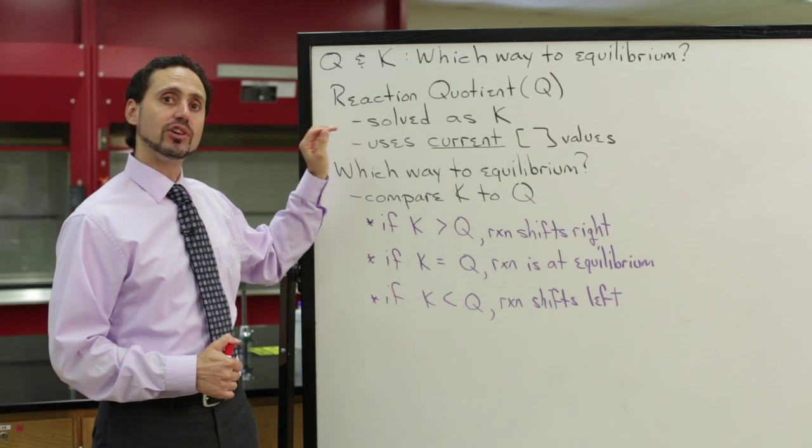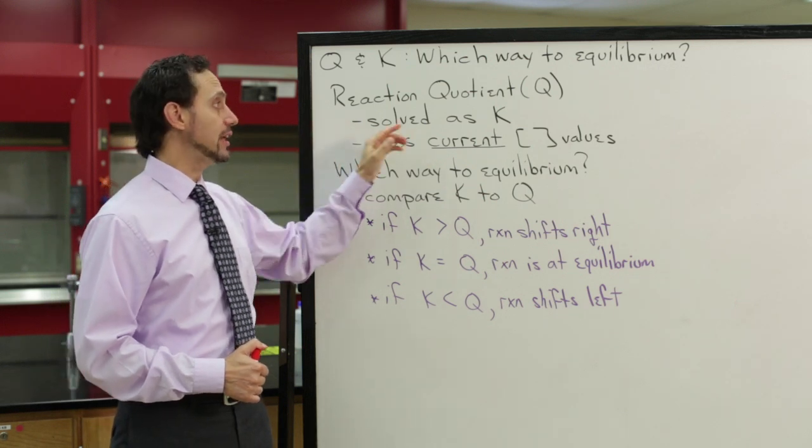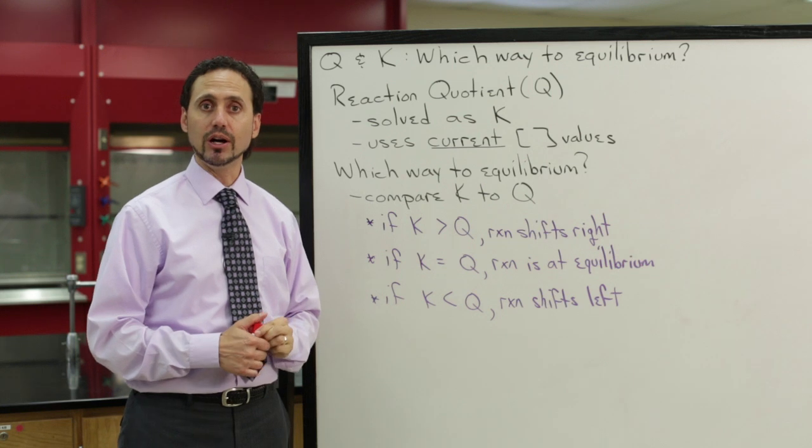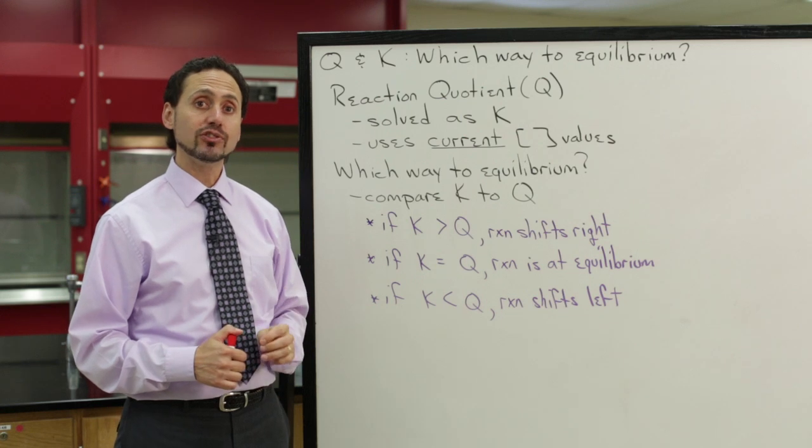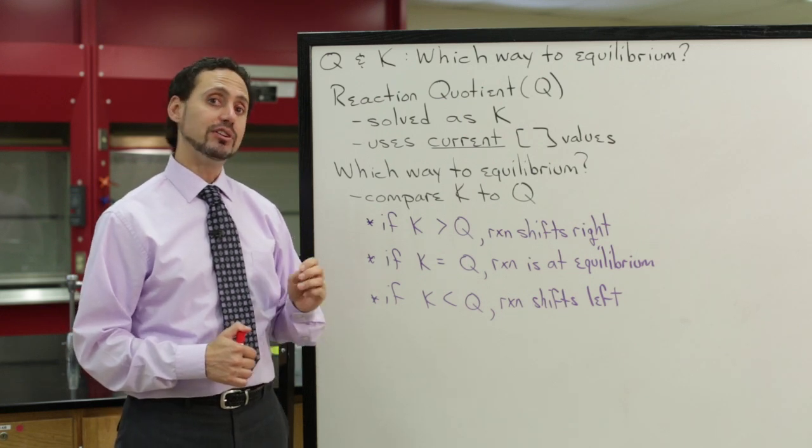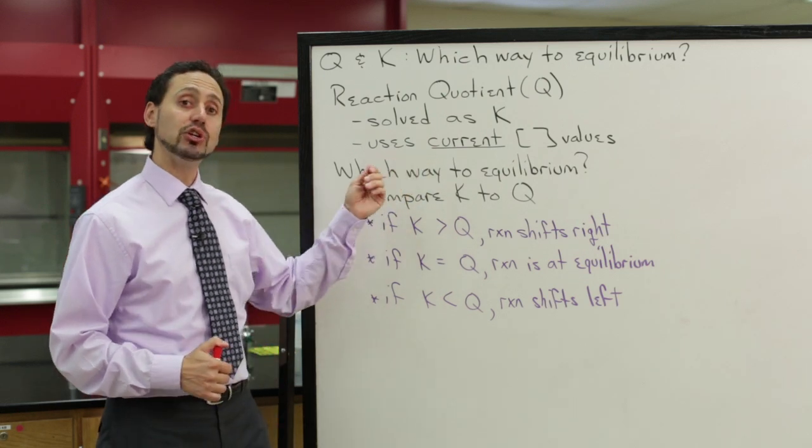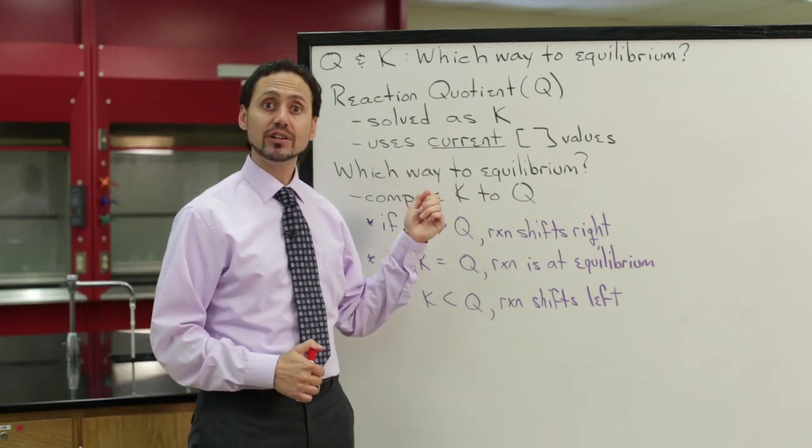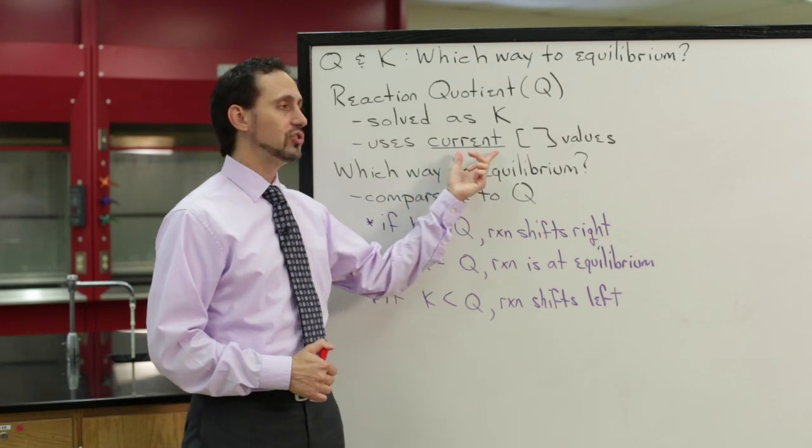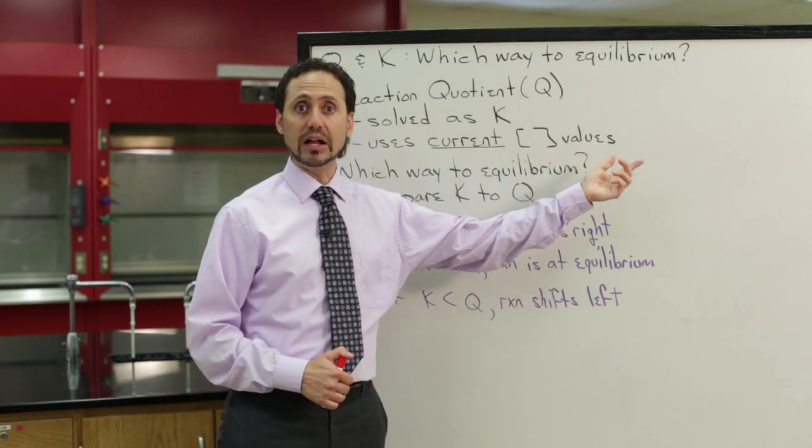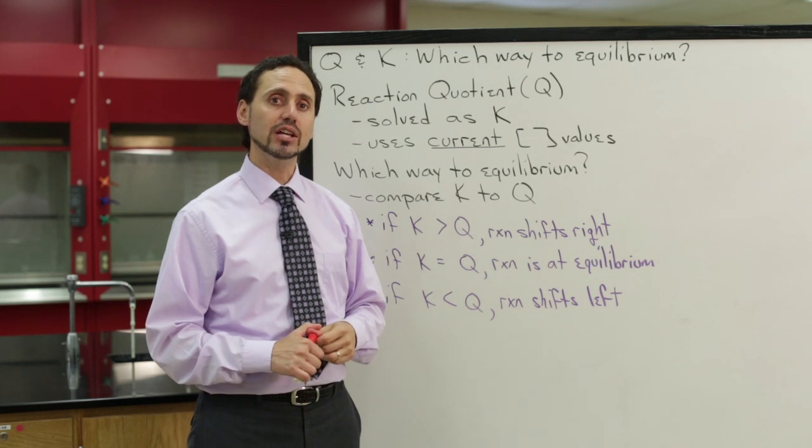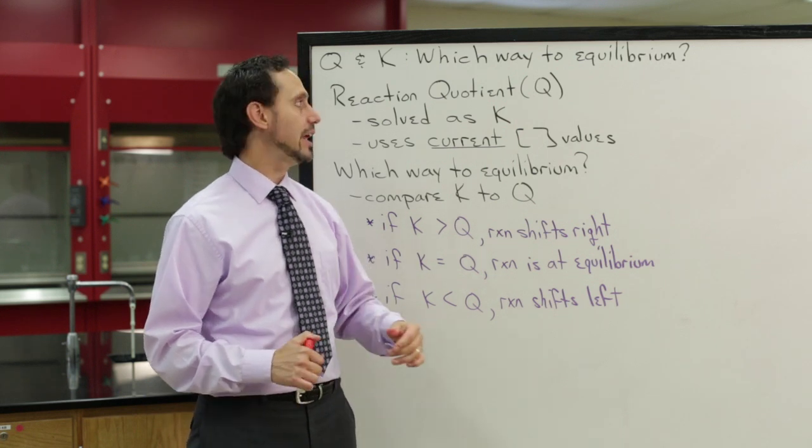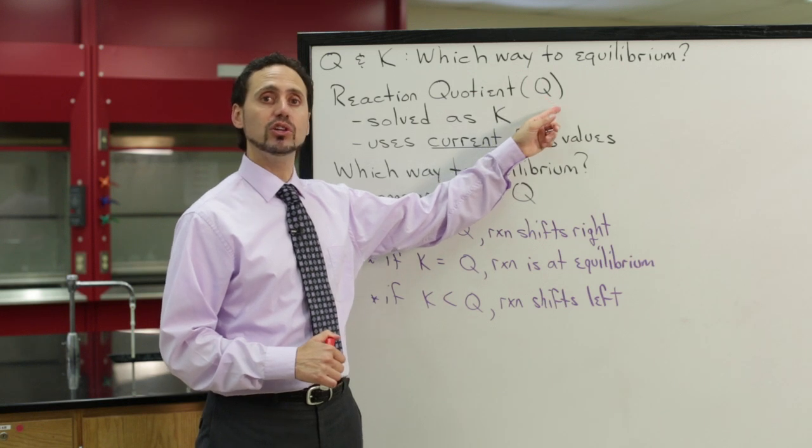The reaction quotient is solved exactly the same way that you would solve for the equilibrium constant K. So, you use the same equilibrium constant expression, but the difference is that instead of using equilibrium values to calculate Q, you use the current concentration values, whatever they are. So you plug those current concentration values into the equilibrium constant expression, and that will give you your value of Q.